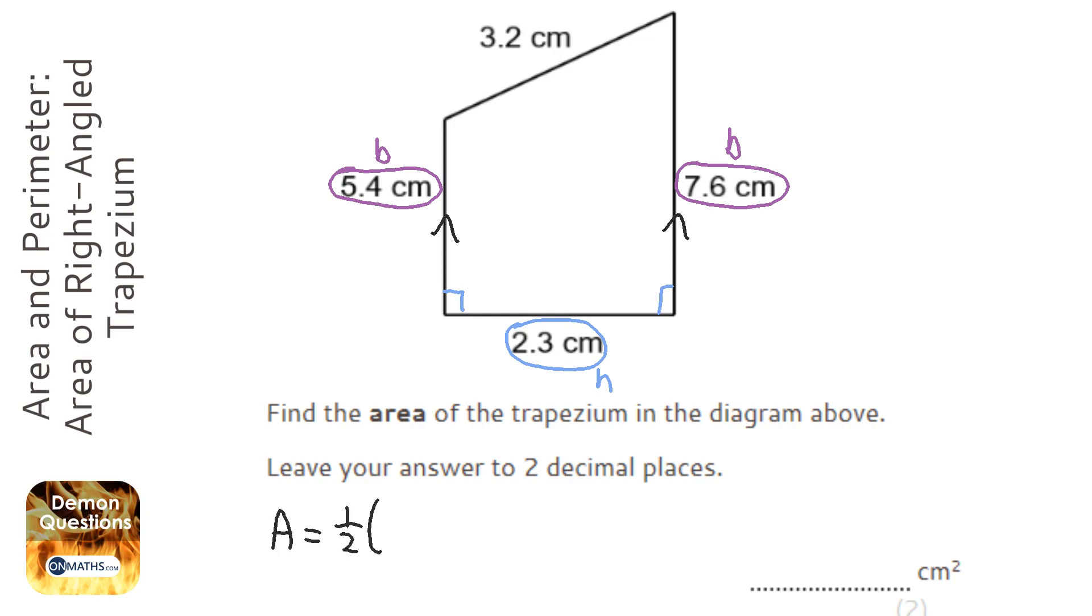So we're going to do 5.4 plus 7.6 and we're going to divide it by two, or times it by a half, means the same thing. So we're going to times it by the height. I'm going to get my calculator. I'm going to do 0.5 brackets, 5.4 plus 7.6, close brackets, times 2.3, and I get the answer of 14.95. Now it needs to be two decimal places, which it already is, so I just leave it at that.